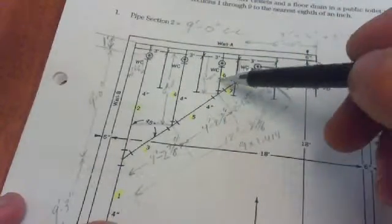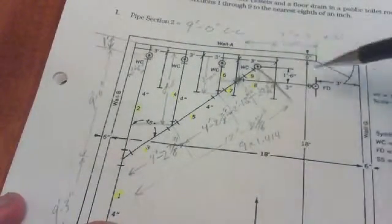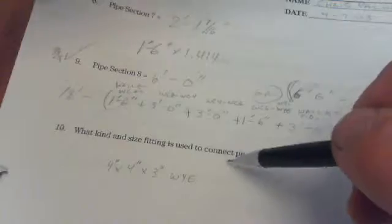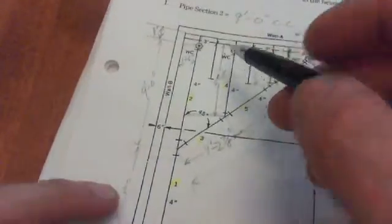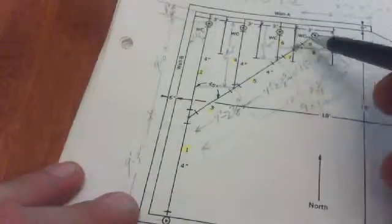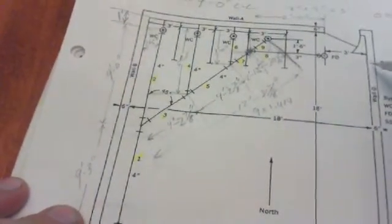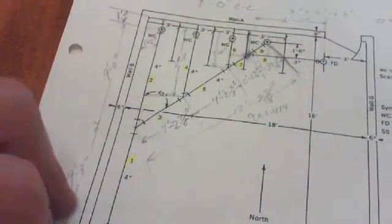Taking that into consideration, we got 1 foot 6, 3 foot, 3 foot, and 1 foot 6. And then we have 3 foot over here. So that's what I did, and I just numbered these water closets by the pipe that was going to them. So 18 feet minus 1 foot 6, minus 3, minus 3, minus 1 foot 6, minus 3, and then minus 3 foot over here. That's minus 6 feet.